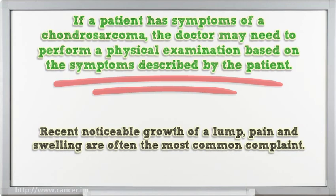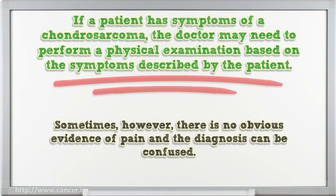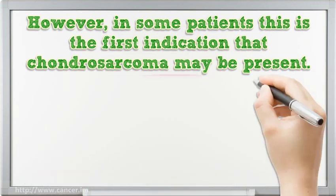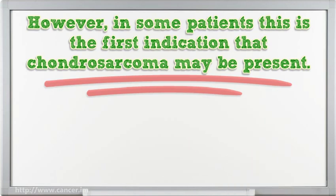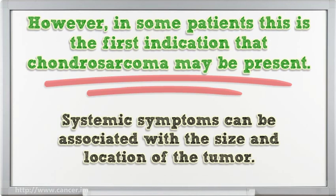Recent noticeable growth of a lump, pain and swelling are often the most common complaints. Sometimes, however, there is no obvious evidence of pain and the diagnosis can be confused. In some patients this is the first indication that Chondrosarcoma may be present. Systemic symptoms can be associated with the size and location of the tumor.